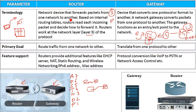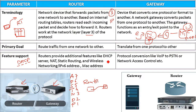The third point is feature support. Because of their terminology and the way they work, the router provides additional features like DHCP — that is Dynamic Host Configuration Protocol server — Network Address Translation, static routing, wireless networking, IPv6 address, and the MAC address. These are very important as far as routing activity is concerned, and there are multiple other features as well.